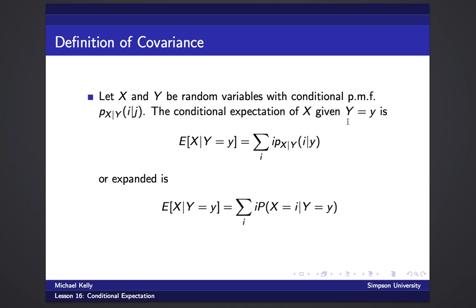And given that y is some value, so we're going to assume y equals some number little y, what's the average value of x? The expected value of x given y equals y is the sum over i of i times P sub x given y of i given y.